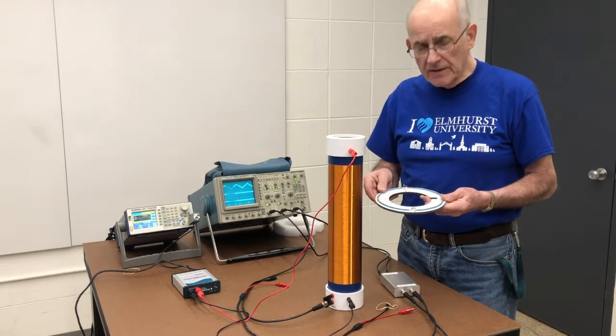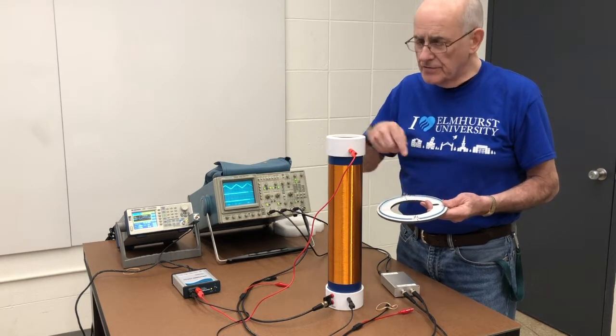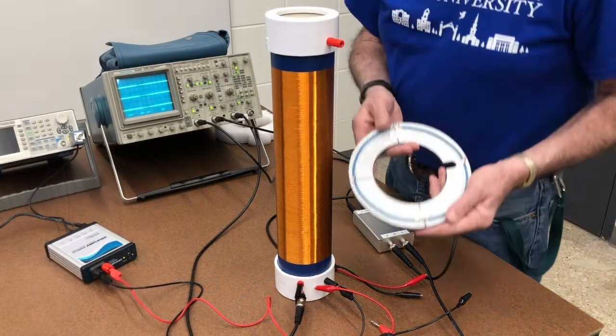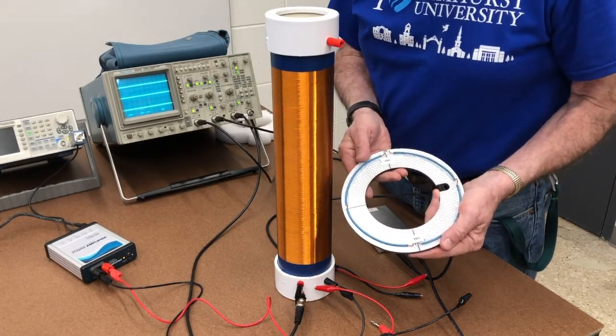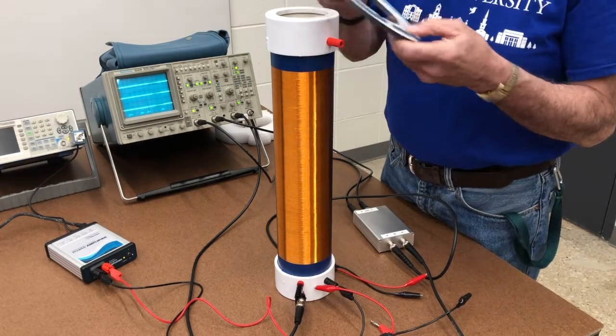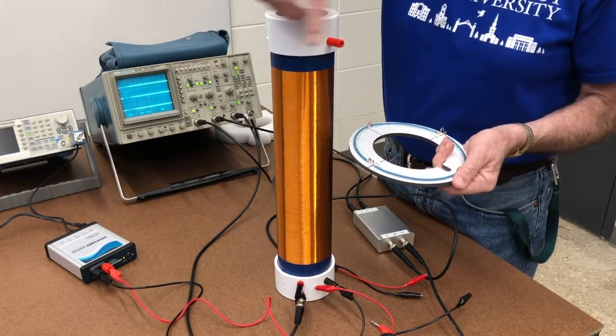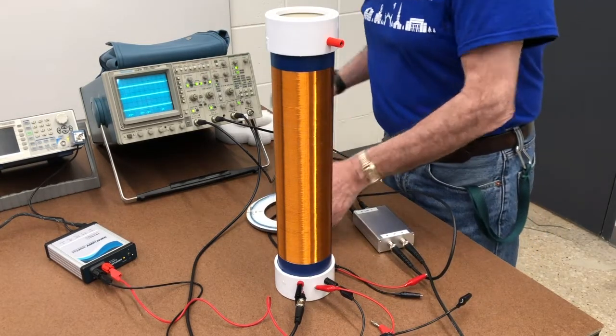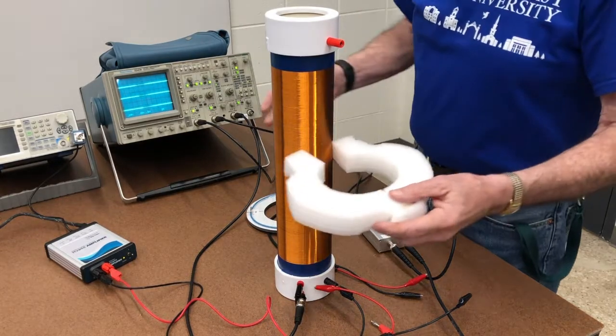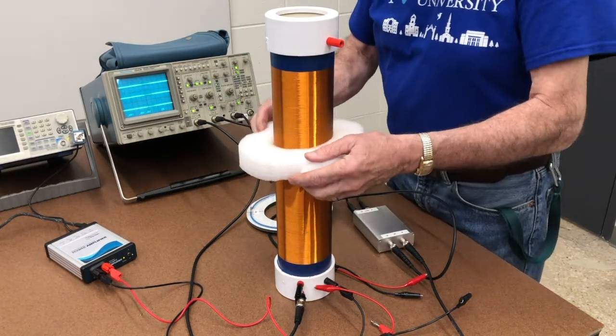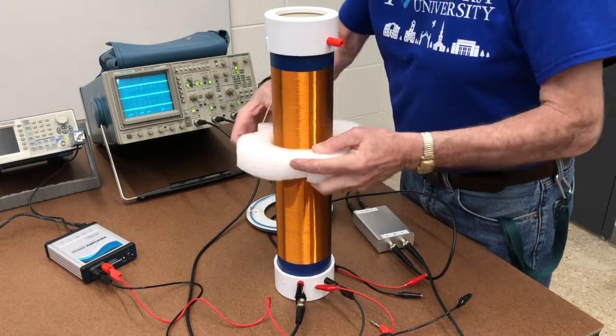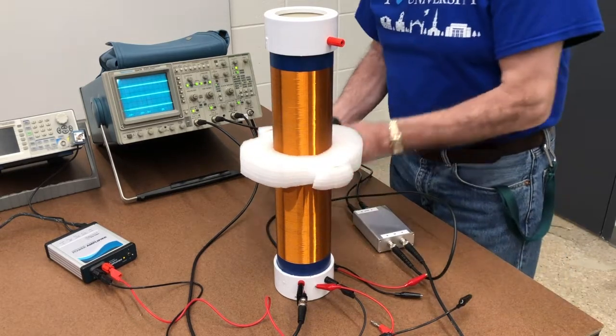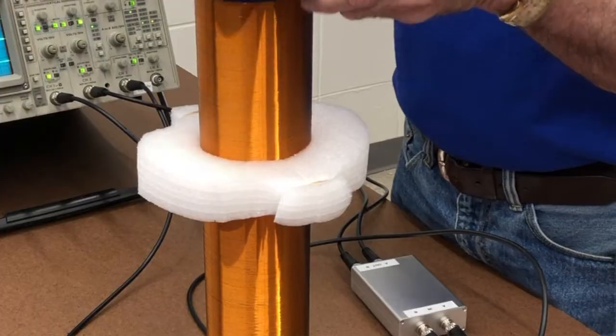So we're going to get an induced current in here due to the changing B field. I'm now going to take our ring and put it over the coil so that we're going to have this ring circling this changing B field. In order to hold it in place, I'm going to use a piece of styrofoam here just to hold it so that it doesn't slide down.